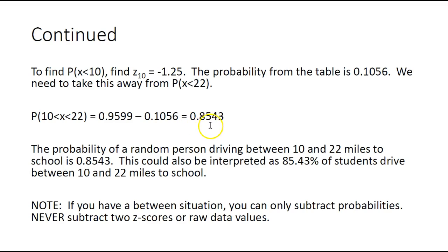Good to note that if you ever have this in-between situation, you should only subtract probabilities. Never subtract z-scores and never subtract raw data. Don't subtract the negative 1.25 and the 1.75, and don't subtract 10 and 22—that's not going to help you.